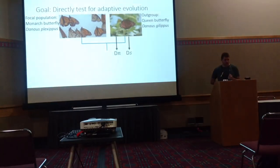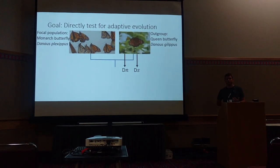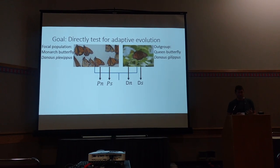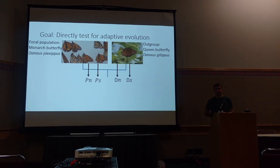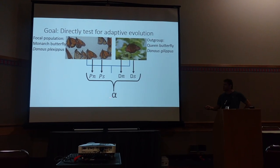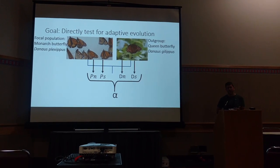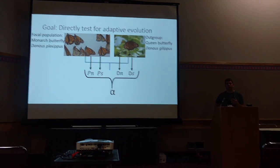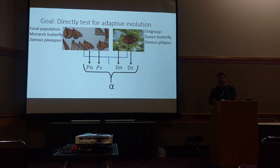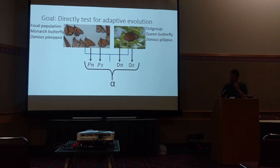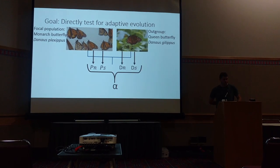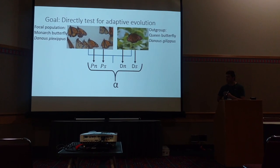But divergence alone isn't really going to tell us much about selection. We also need the other half of that equation — within-species variation — to look at the rate of variation that is converted into between-species fixed differences. We can crunch all this down into the alpha statistic, which is an estimate of the proportion of substitutions that are fixed due to positive selection. A higher alpha means a greater proportion of fixed differences are due to selection. There's obviously a lot of bioinformatics under the hood, but in the interest of time I'll skip to the results.